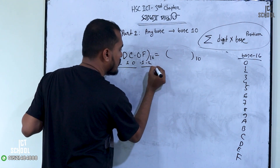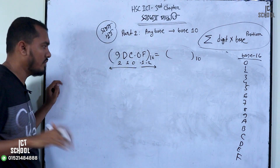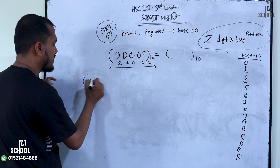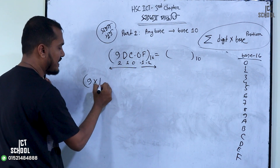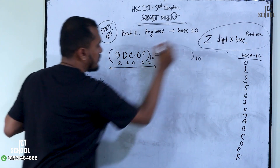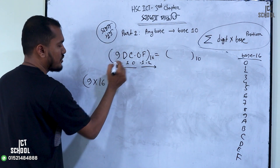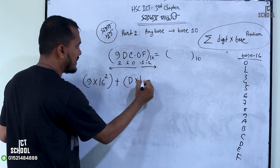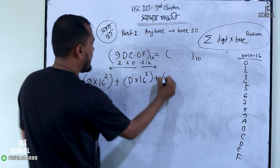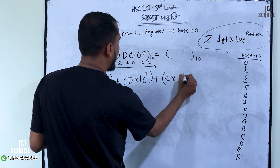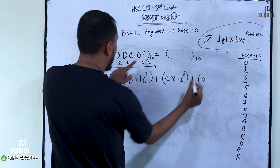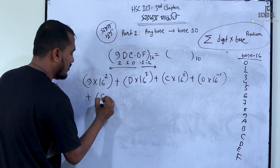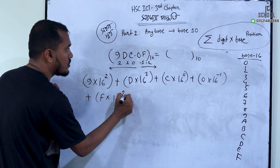Minus 1, minus 2 — this is very simple. First of all, the digit: base is 16. This is digit into base, this is your position. It is position 9, it is number position 2. Plus D into 16 to the power 1.